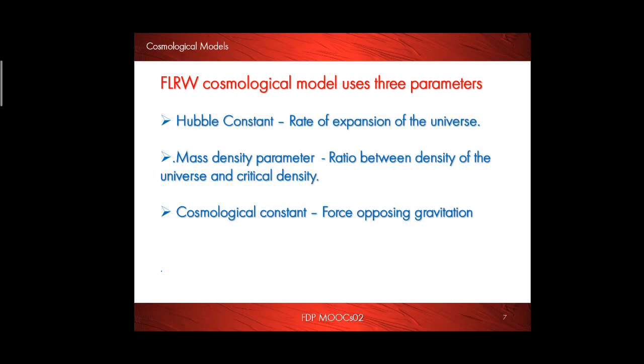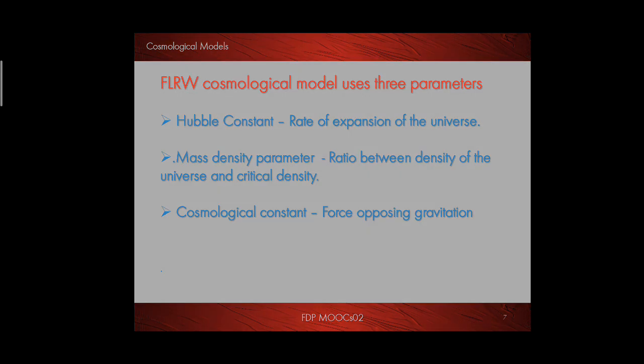F.L.R.W. Cosmological model uses three parameters. Number one is Hubble's constant which explains the rate of expansion of the universe. Mass density parameter is the ratio between density of the universe and critical density. And third one is cosmological constant which is the force opposing gravity.